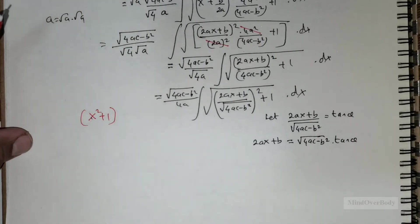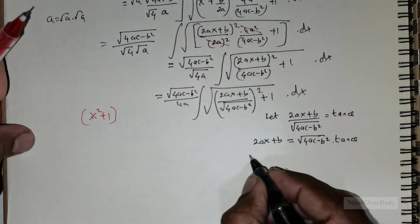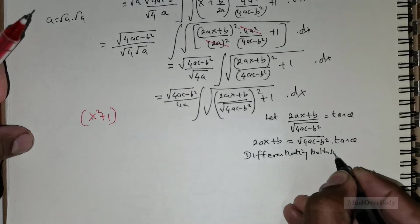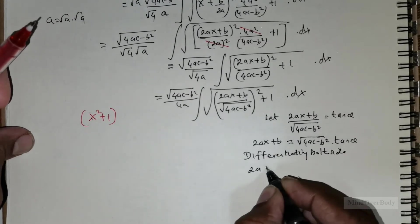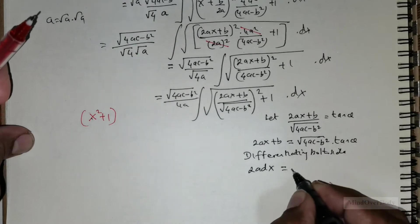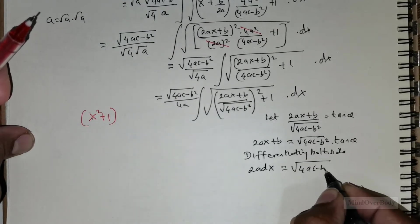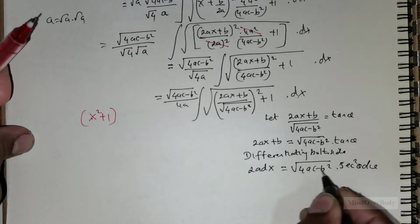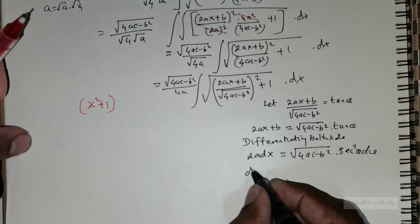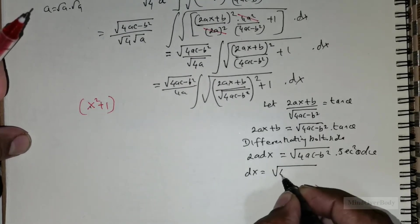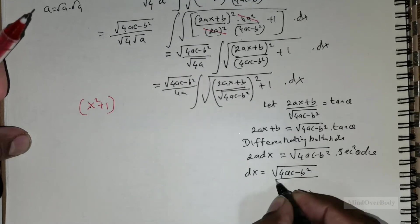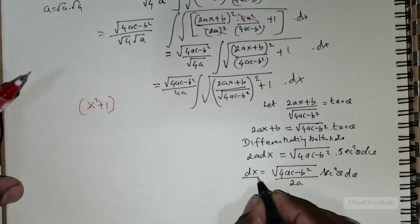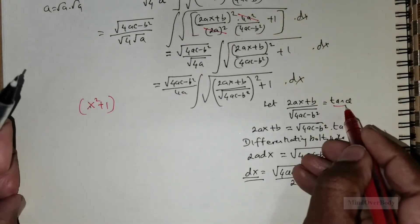I do this because I want to know the value for dx. Differentiating both sides, we get 2a dx equals √(4ac − b²) times sec²θ dθ. Therefore, dx equals √(4ac − b²) / (2a) times sec²θ dθ. So I have the substitution for both dx and tan θ.